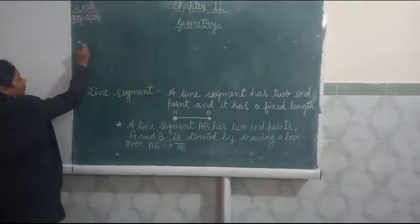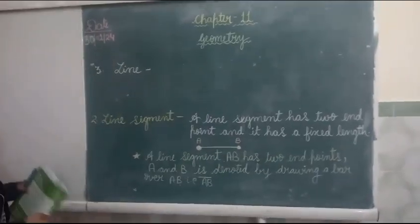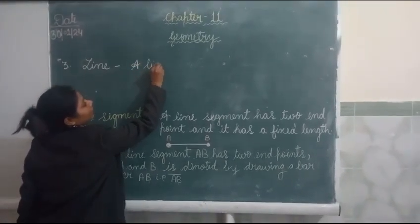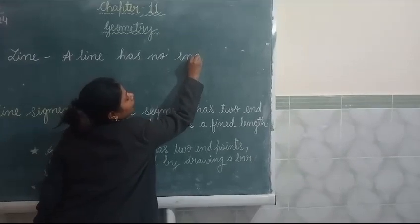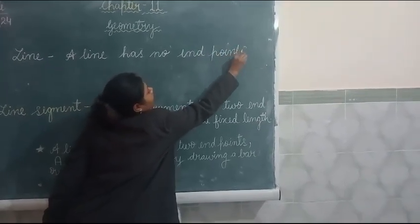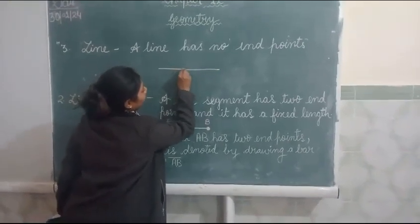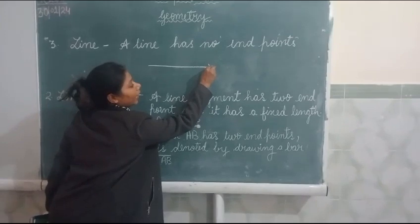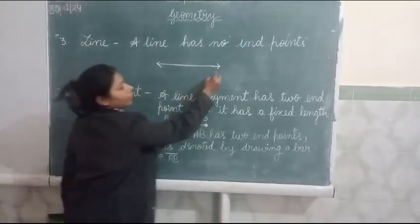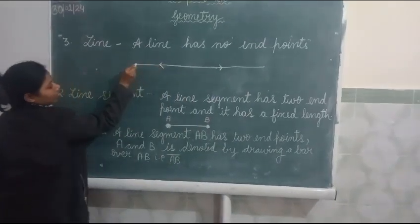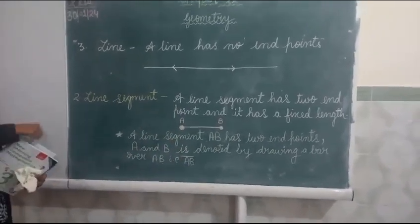Third is line. A line has no end points. We understand this with the help of a diagram. We draw the arrow heads. The arrow head shows that there are no end points. We increase this line like this and like this. There is no end point. This is called a line. And we cannot measure this line.